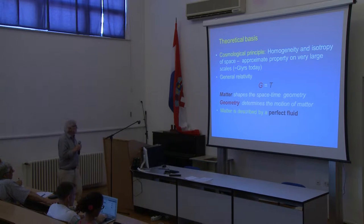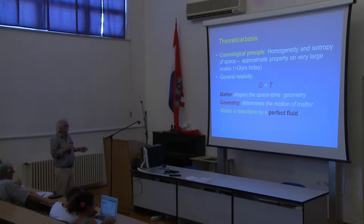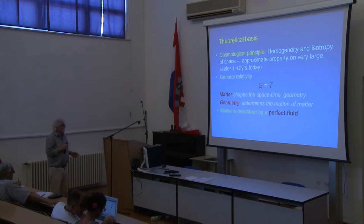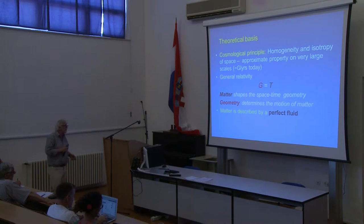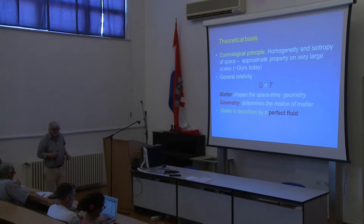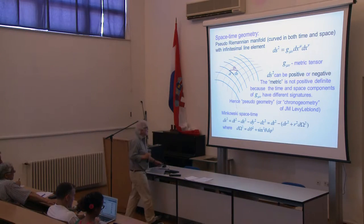The theoretical basis is first the cosmological principle, which we accept to describe global cosmology — we assume homogeneity and isotropy of space on large scales of about giga-light-years. Then, of course, general relativity is the most important ingredient, which relates geometry on the left side with matter on the right-hand side. The influence is reciprocal: matter shapes the space-time geometry and geometry determines the motion of matter. Theoretically, global cosmology can be described by considering a so-called perfect fluid to describe matter.